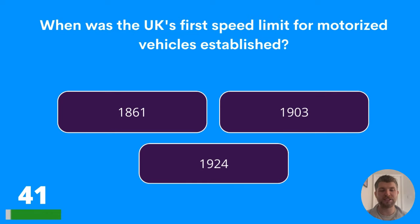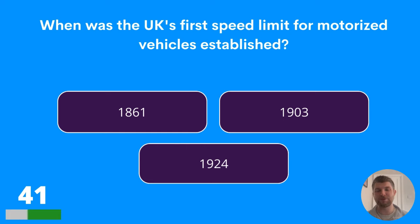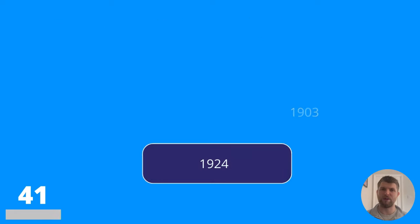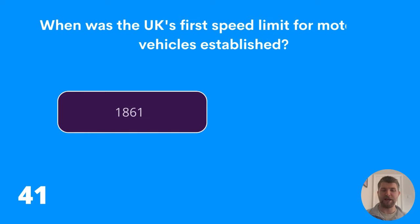Let's hope question 41 is better. When was the UK's first speed limit for motorised vehicles established? 1861, 1903, or 1924? The answer is 1861.